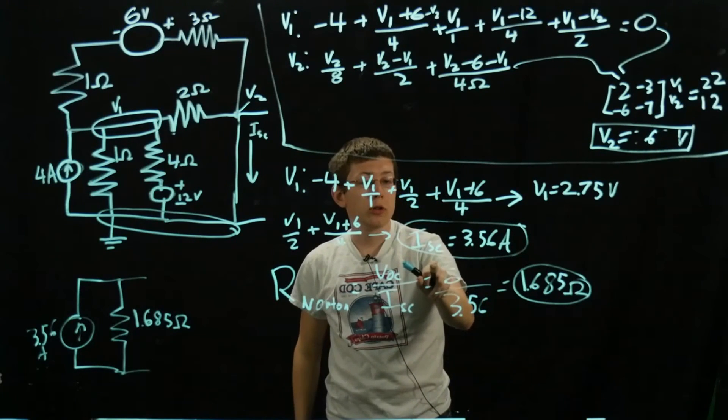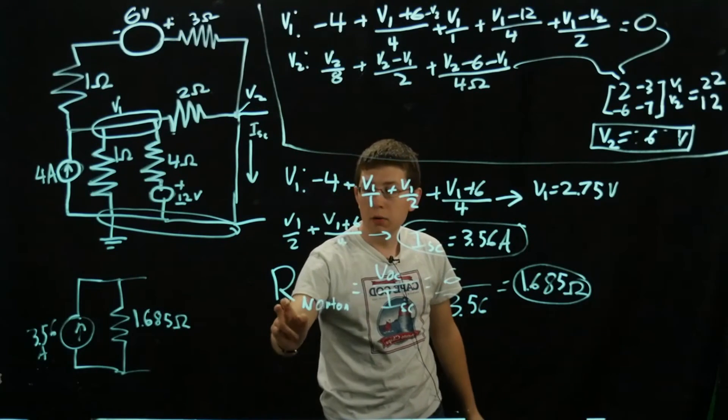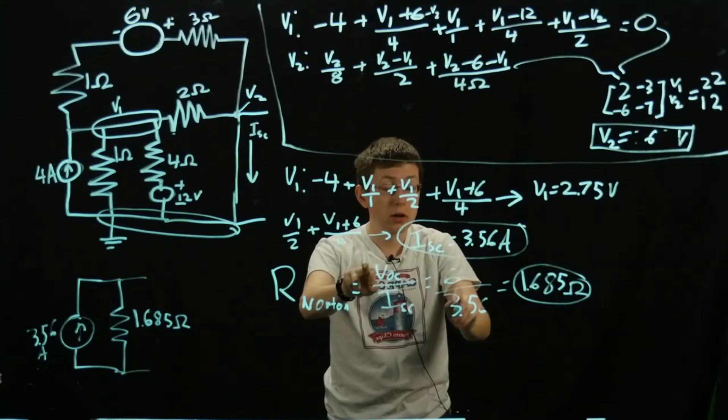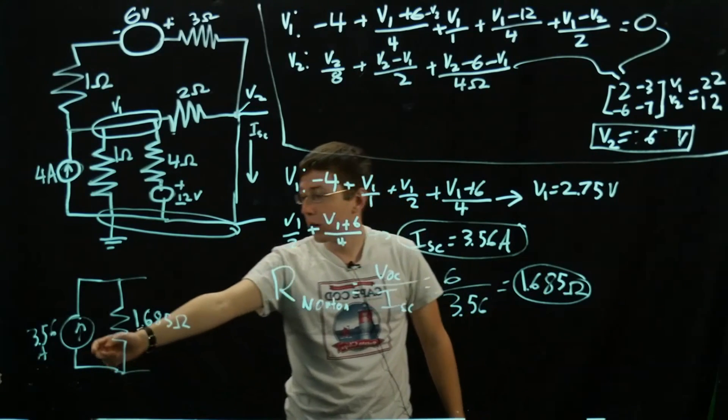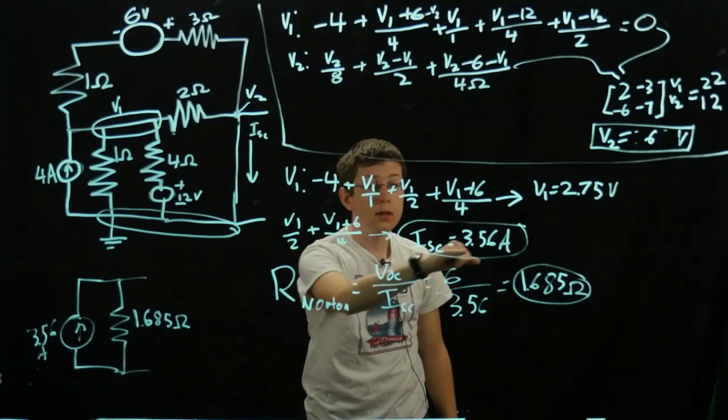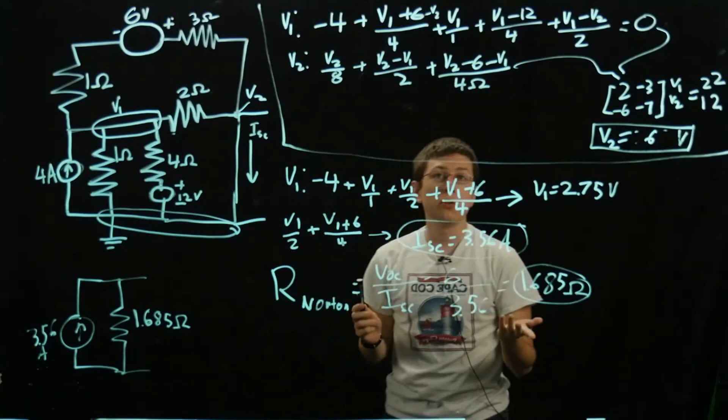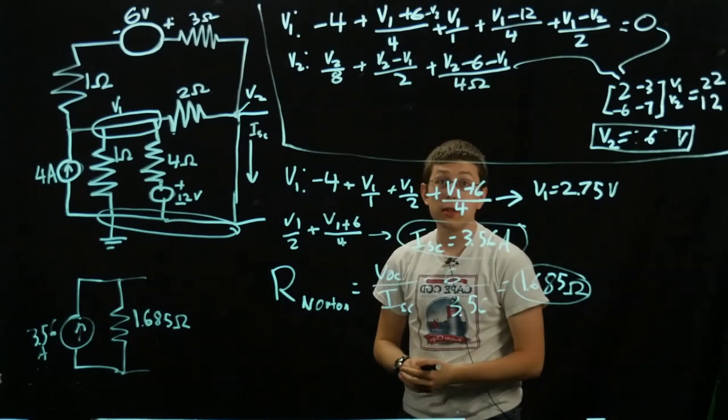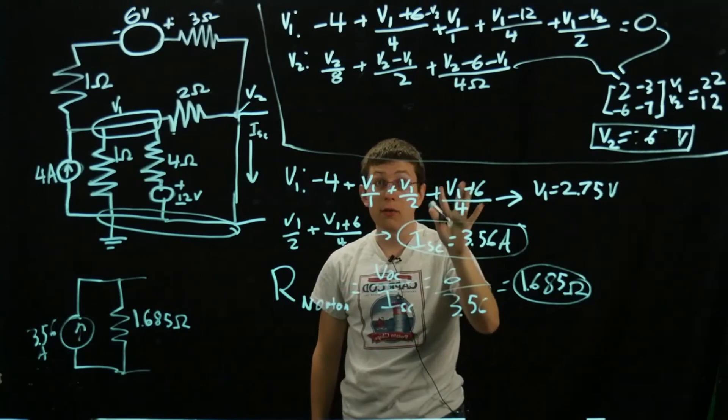Once we had that, that gave us our short circuit current. Our Norton resistance was just our open circuit voltage divided by our short circuit current, and our current was what we found here. That's really all there is to Norton. It's not any more difficult than Thevenin, but it's just as useful. This was Dan from UConn HKN signing off.